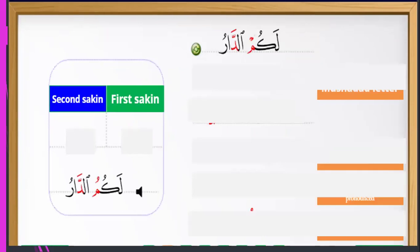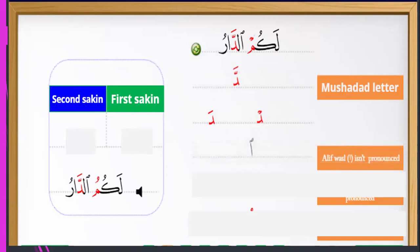Example: 'lakumul dar.' Dhamma is the mushaddad letter. The first dal has sukun, the second dal has sukun. It was easy to pronounce it as 'lakumut dar.'